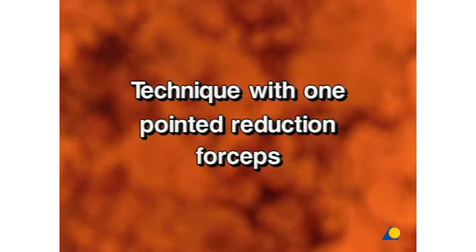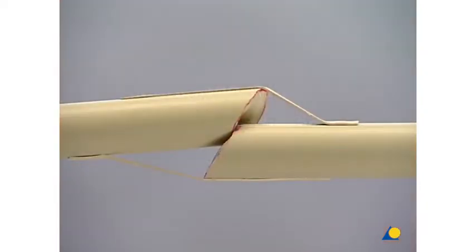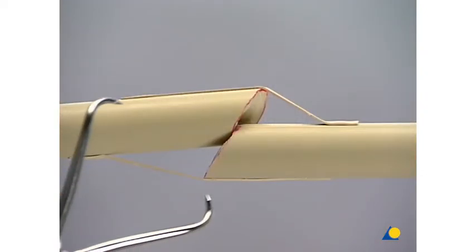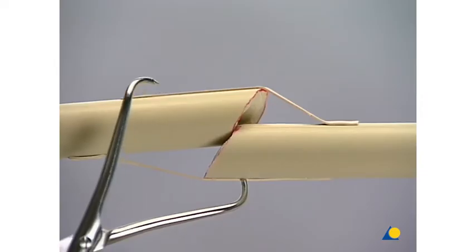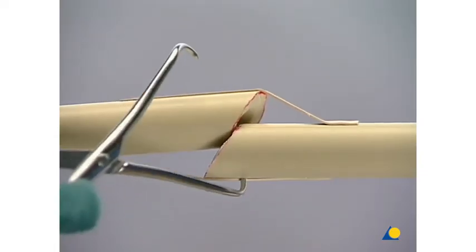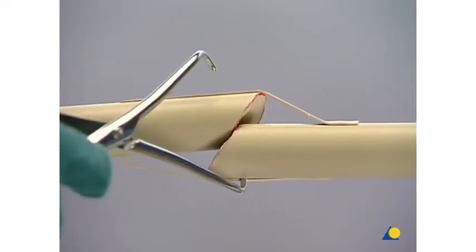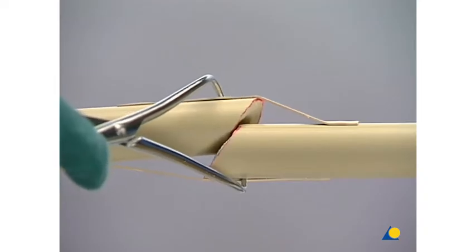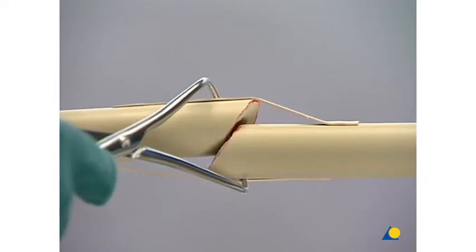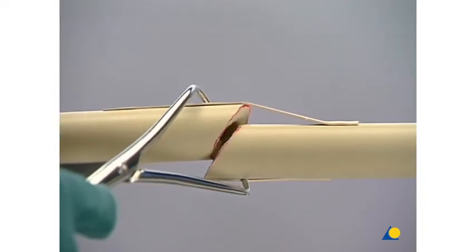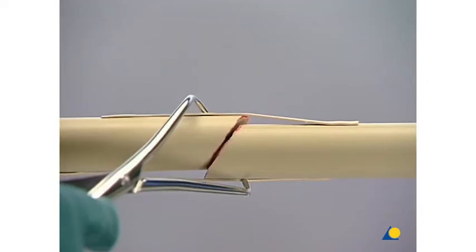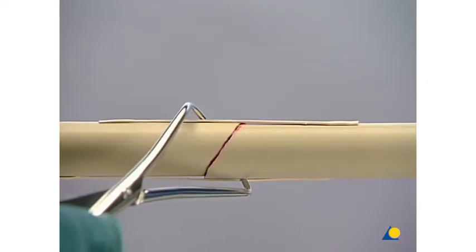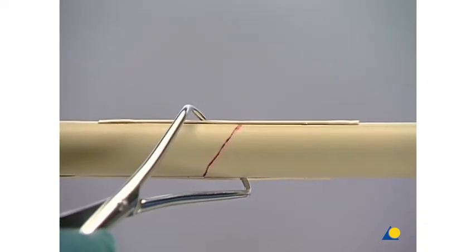Technique with one-pointed reduction forceps. With a simple oblique shaft fracture, the proximal and the distal main fragments can each be grasped by one jaw of the reduction forceps. Tilting the forceps results in the desired extension and the reduction of the addlateral dislocation.